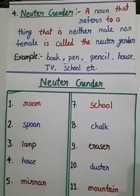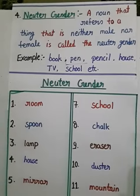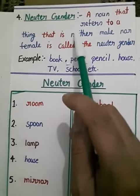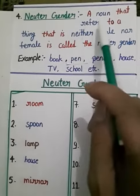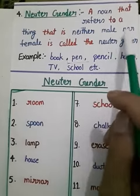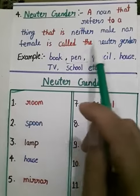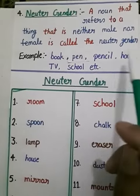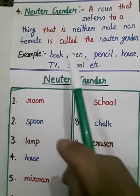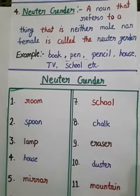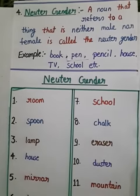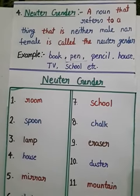Once again, a noun that refers to a thing that is neither male nor female is called neuter gender. Examples are given. If you have any problem, you can comment in the comment box.